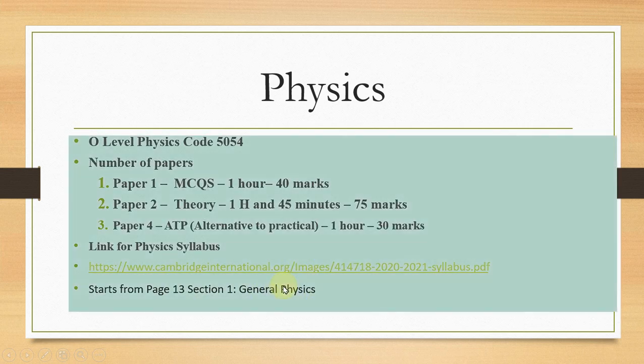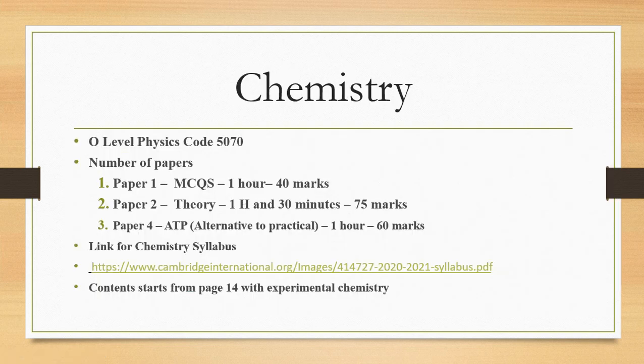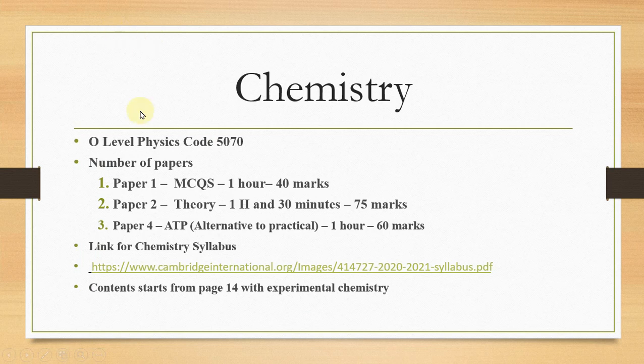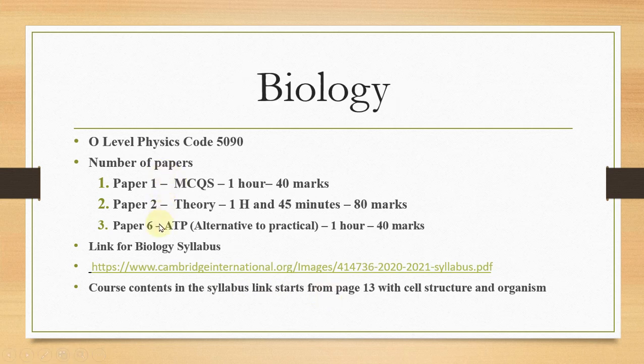Similarly in Chemistry, again there are three papers. The code is 5070. In Physics the code is 5054. Three papers again: Paper 1, 2 and 4. Paper 4 is ATP, 40, 75 and 60 marks. This is the link for syllabus. Page 14 gives you the beginning of syllabus with topic Experimental Chemistry. Biology: Paper 1, 2 and 6. Paper 6 is ATP, Paper 1 is MCQs, Paper 2 is Theory.